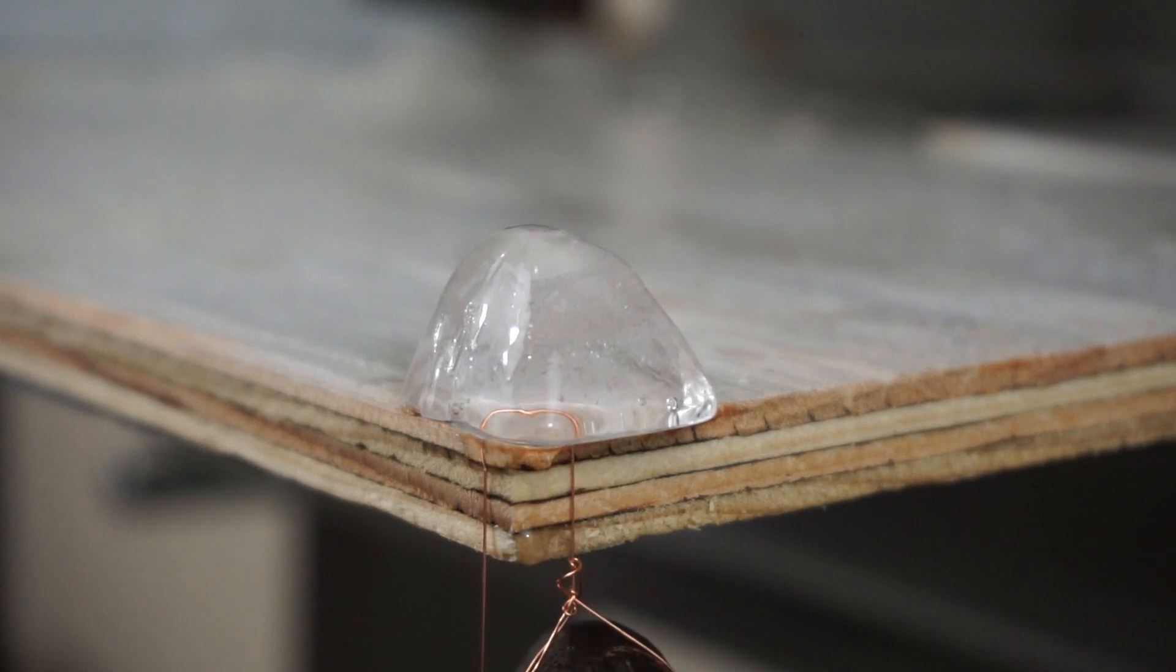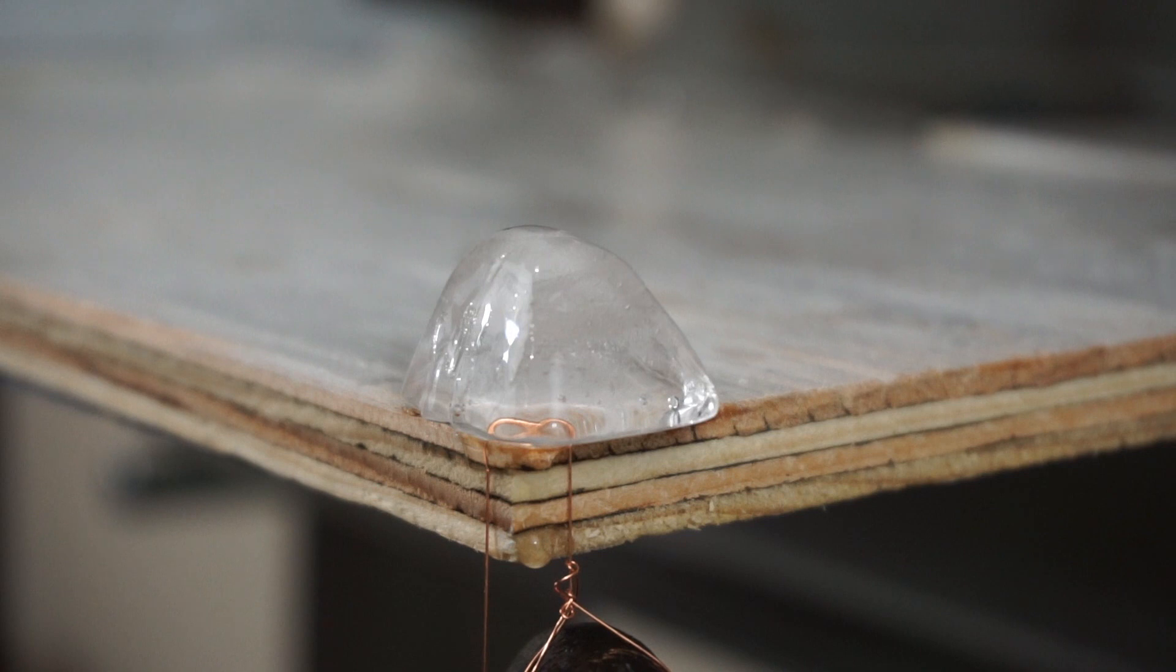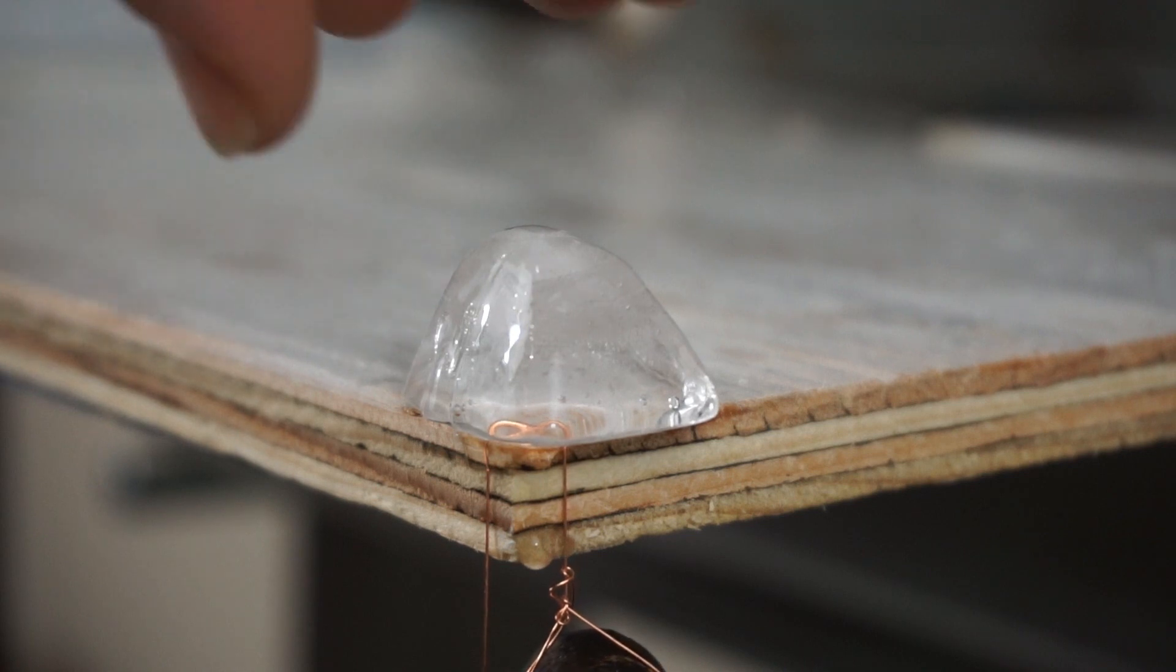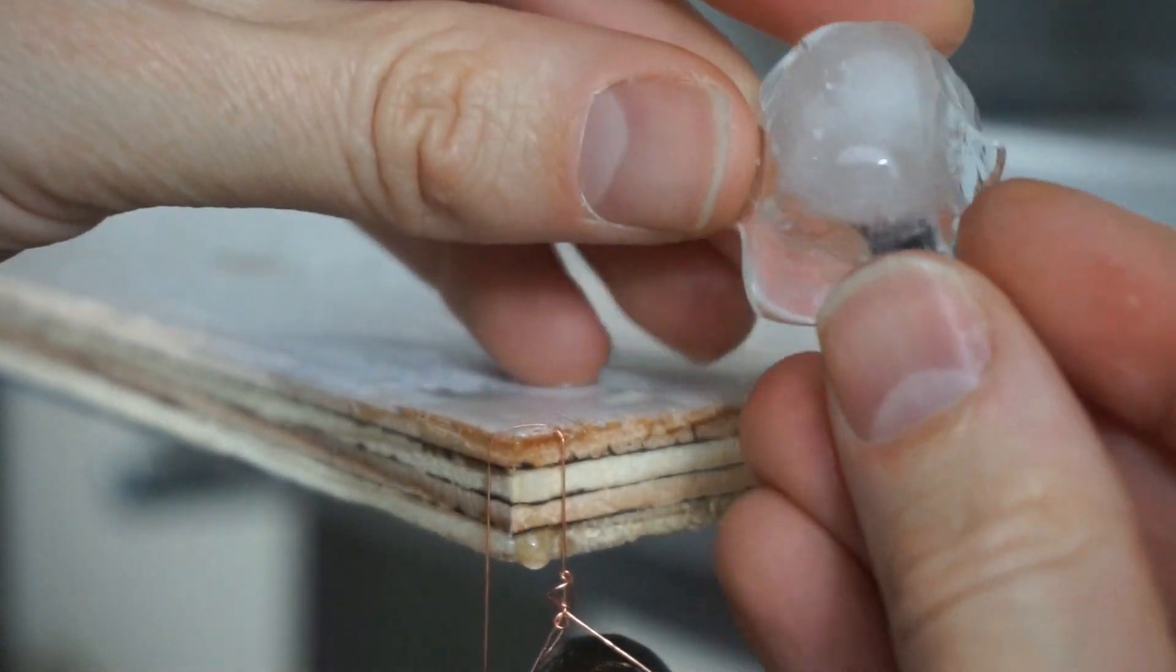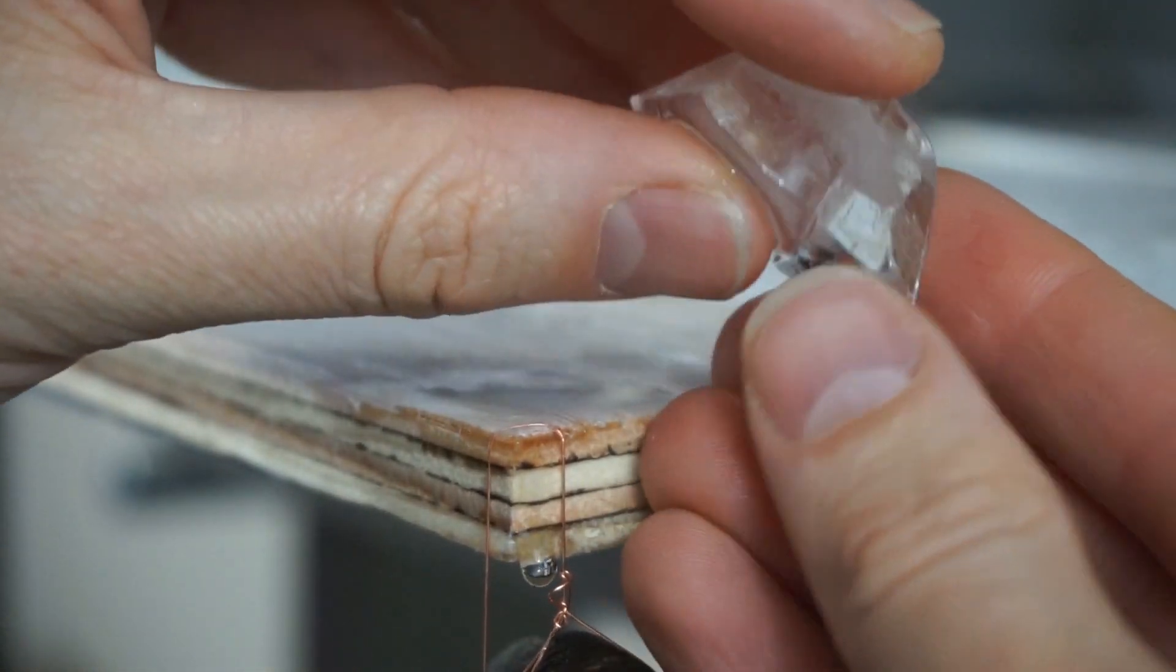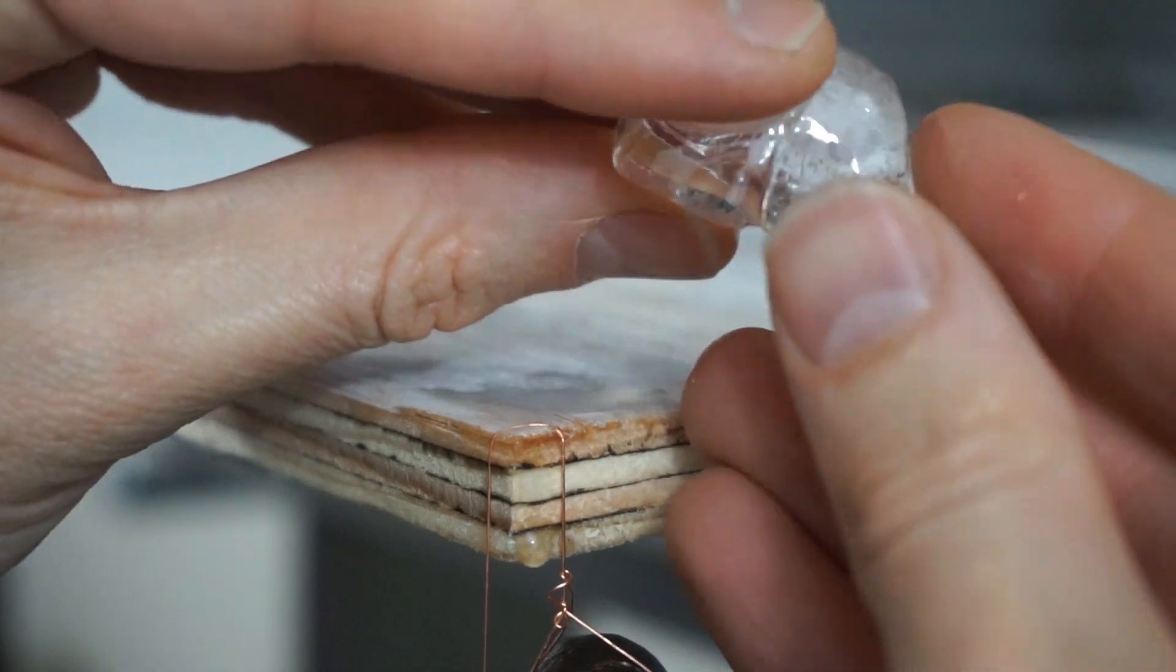But I do have a better way to do it with a lot more pressure, and that's in my hydraulic press. So in the hydraulic press there will be some heat from the press itself, but there should be enough pressure to actually melt the ice due to pressure itself and not just heat.